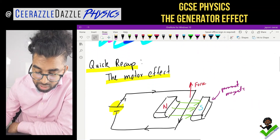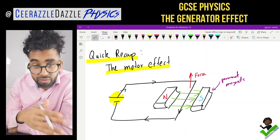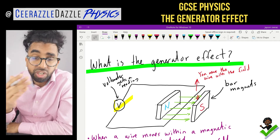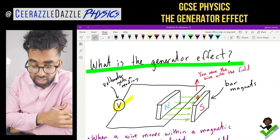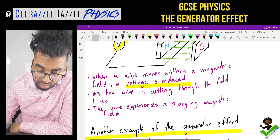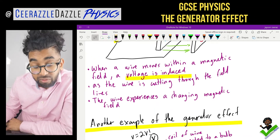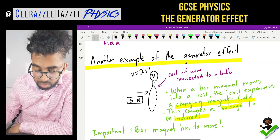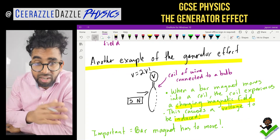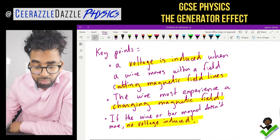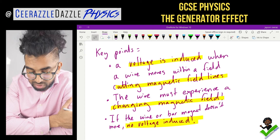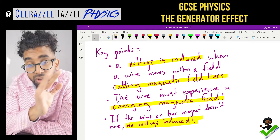Quick recap from the start: in the motor effect, passing current through a wire in a field generates a force. But in the generator effect, if we take that wire and provide the force — move it within the field — we generate a voltage. Similarly, taking a bar magnet and moving it within a coil also generates a voltage. Key points: a voltage is induced when a wire moves within a field; the wire must experience a changing magnetic field; if the wire or bar magnet doesn't move, no voltage is induced.